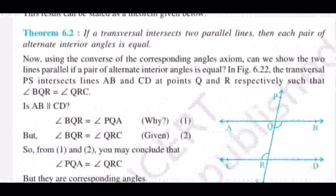The next theorem is: if a transversal intersects two parallel lines, then each pair of alternate interior angles is equal. If a transversal intersects parallel lines, then each pair of alternate interior angles is equal.